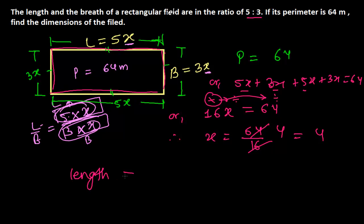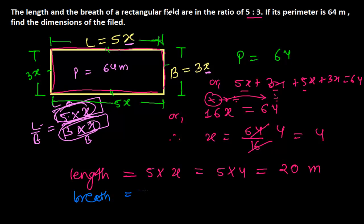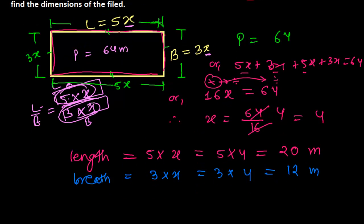So our length is 5 times X, which is 5 times 4, equals 20 meters. And our breadth is 3 times X, which is 3 times 4, equals 12 meters. We have now found both the length and the breadth, which are called the dimensions of the field.